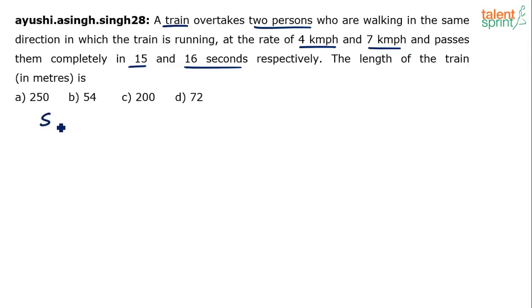Now let's assume the speed of the train is St. Speed of the man 1 is 4 and speed of the man 2 is 7. Of course these are not assumptions, these are the actual values.